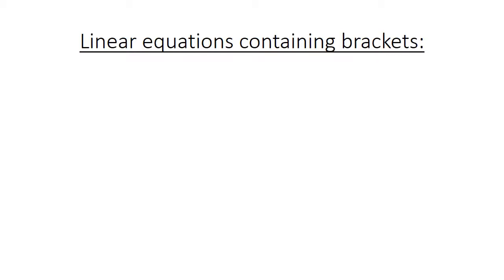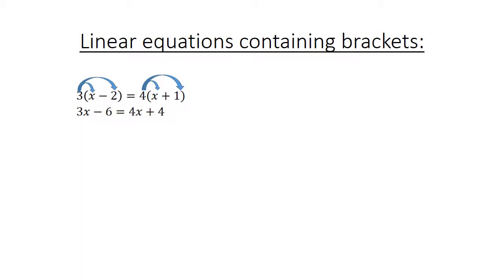Linear equations containing brackets. We have 3 in brackets: x minus 2 equals 4 in brackets x plus 1. We start by multiplying on both sides: 3x minus 6 equals 4x plus 4. We move all like terms to one side: 3x minus 4x equals 4 plus 6. Negative x equals 10, so x equals negative 10.